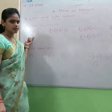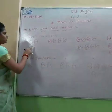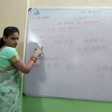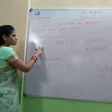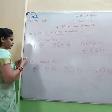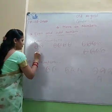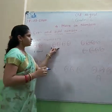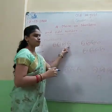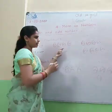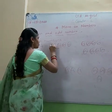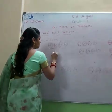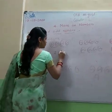What do you mean by even numbers? Here there are 2 balls — 1, 2. So it is 1 pair. Here 1, 2, 3, 4 balls are there, means 1 pair and another 1 pair. Here 2 pairs.